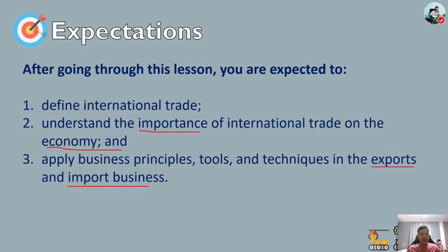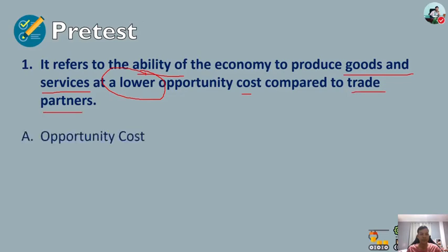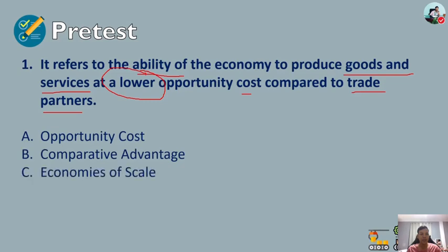Before we jump into our discussion, we will have a pre-test first. Number one: it refers to the ability of the economy to produce goods and services at a lower opportunity cost compared to trade partners. The choices are: A) opportunity cost, B) comparative advantage, C) economies of scale, and D) international trade.